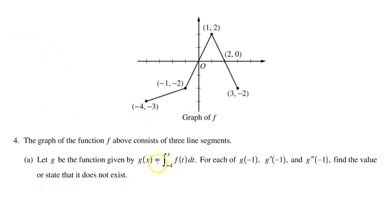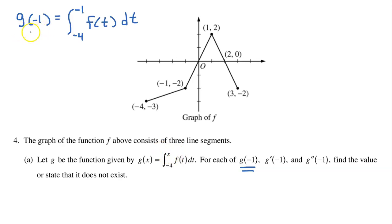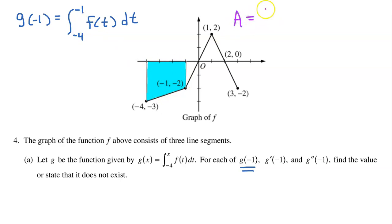Let's begin by evaluating g at negative 1. Like any function, if I want to find g at negative 1, I take negative 1 and plug it in for x. So we have this definite integral. The definite integral from negative 4 to negative 1 represents the area between the curve and the x-axis from negative 4 to negative 1. In other words, this integral represents the area of this trapezoid.